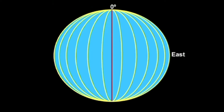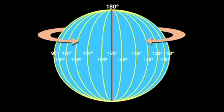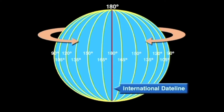Going east from the prime meridian we see 15 degrees east, then 30 degrees east, and so on until it reaches 180 degrees on the other side of the Earth. We see the same thing going west — 15 degrees west, 30 degrees west, and so on until they reach 180 degrees. Eventually the two sets of lines meet at 180 degrees, opposite the prime meridian. This line of longitude is called the International Date Line.